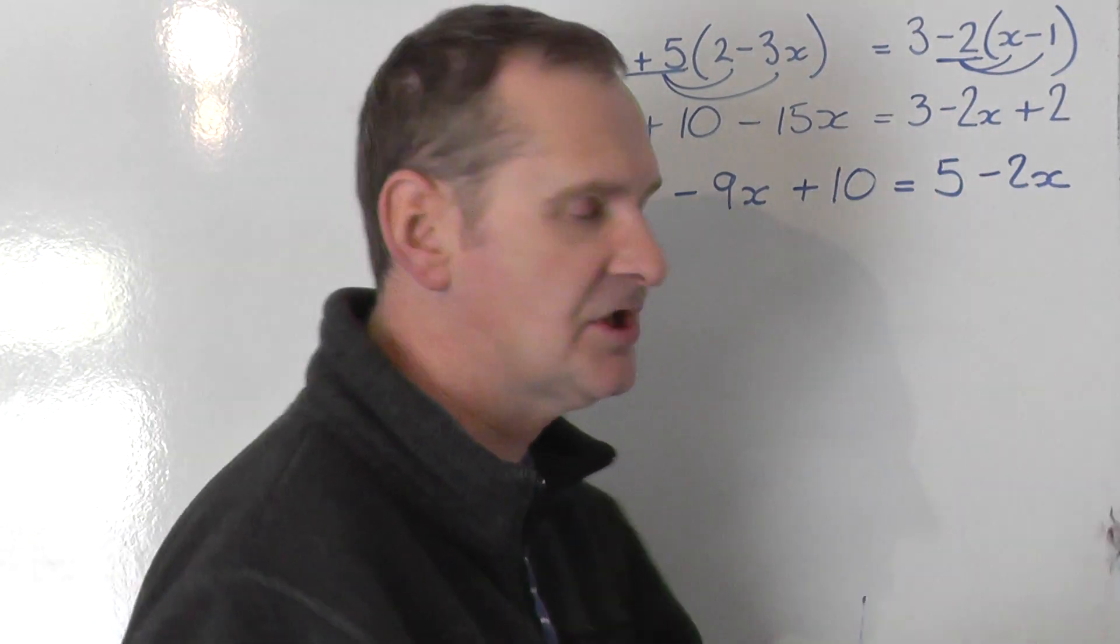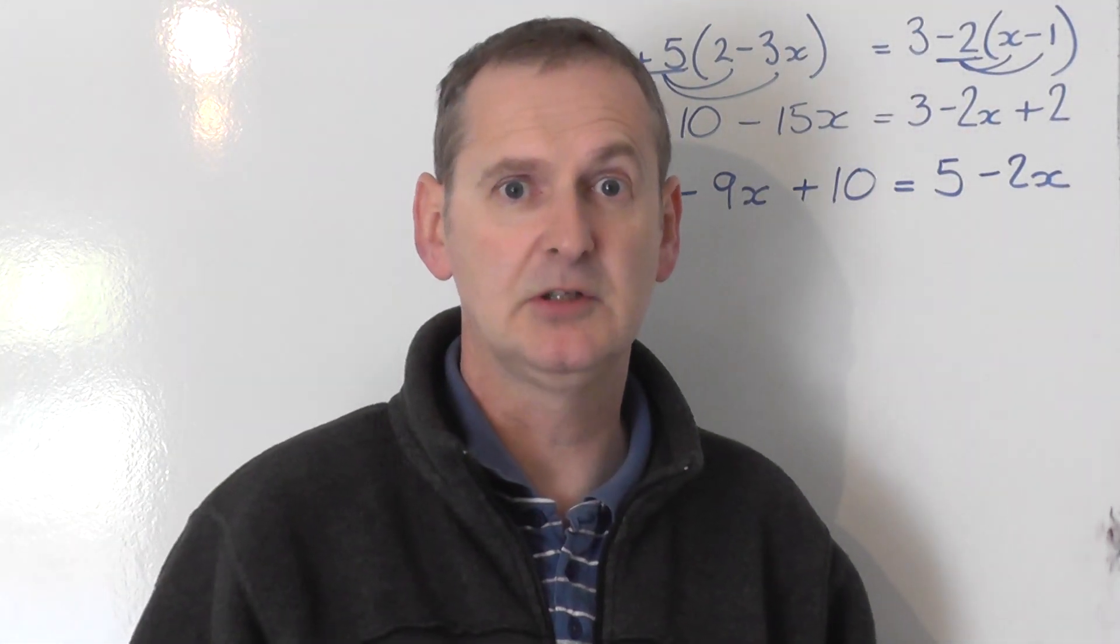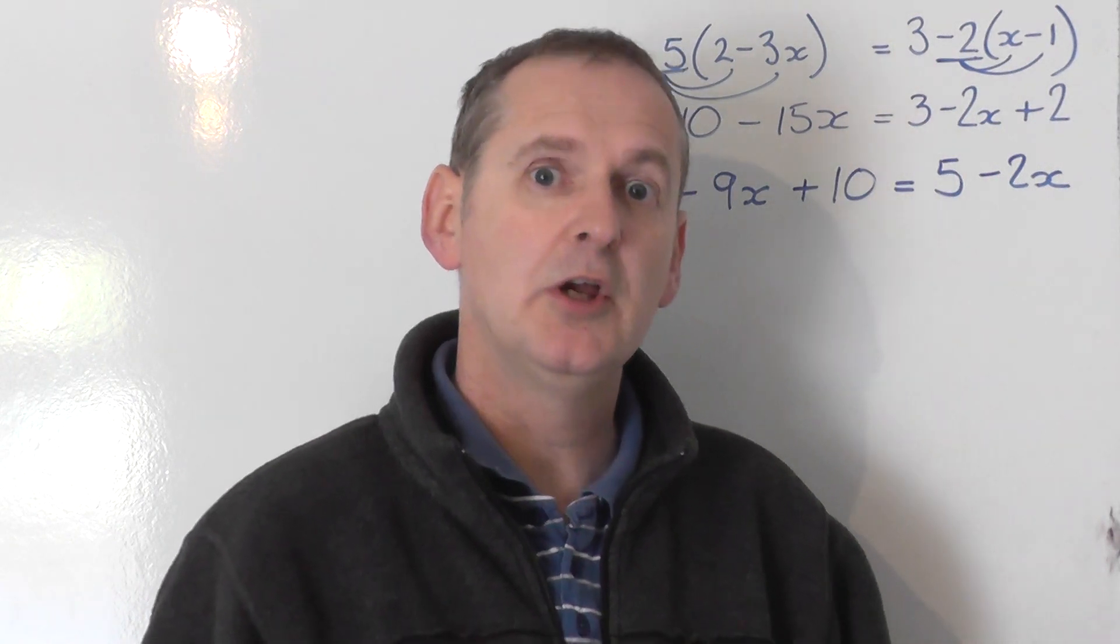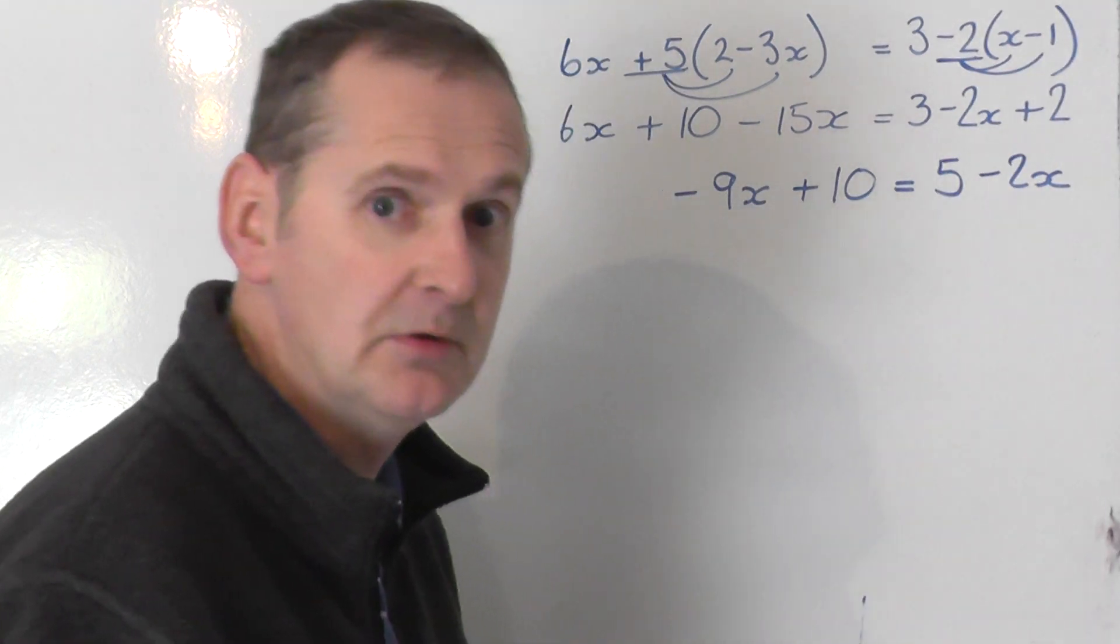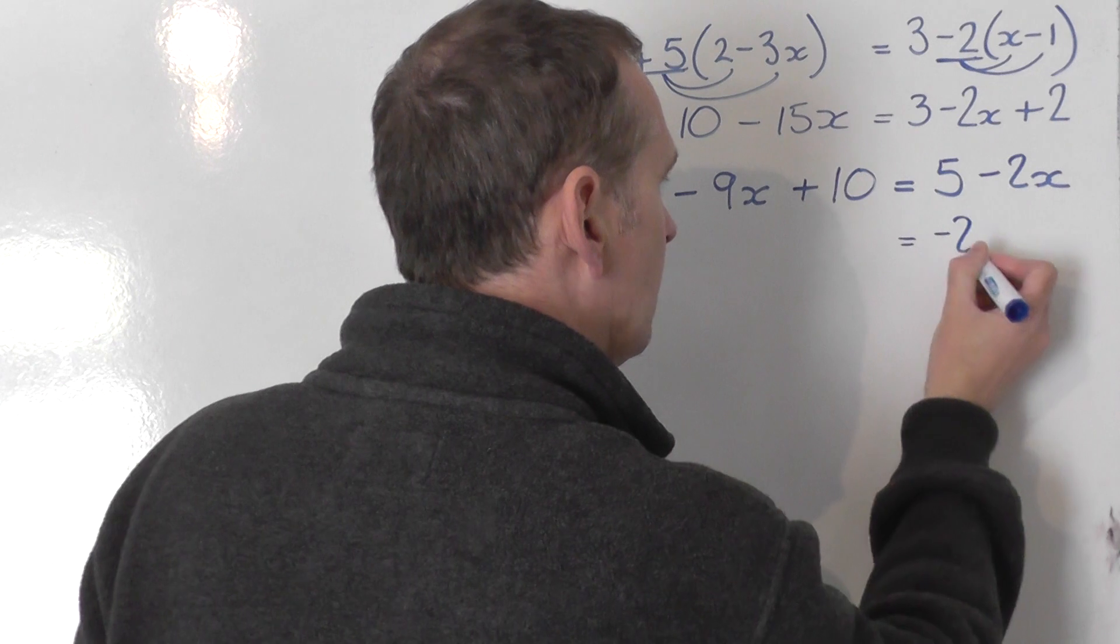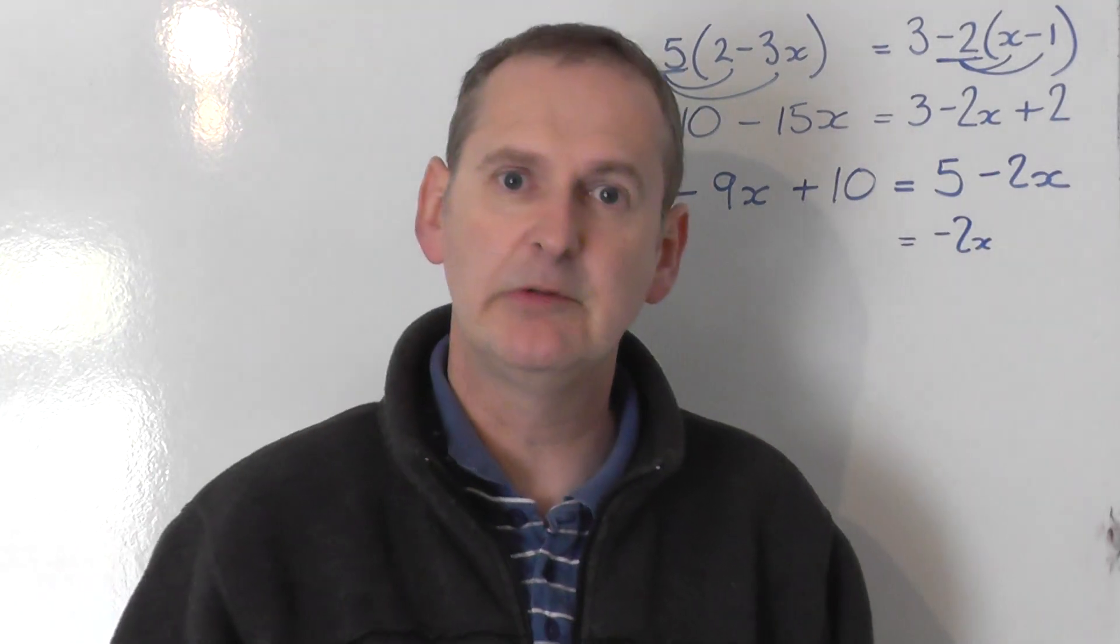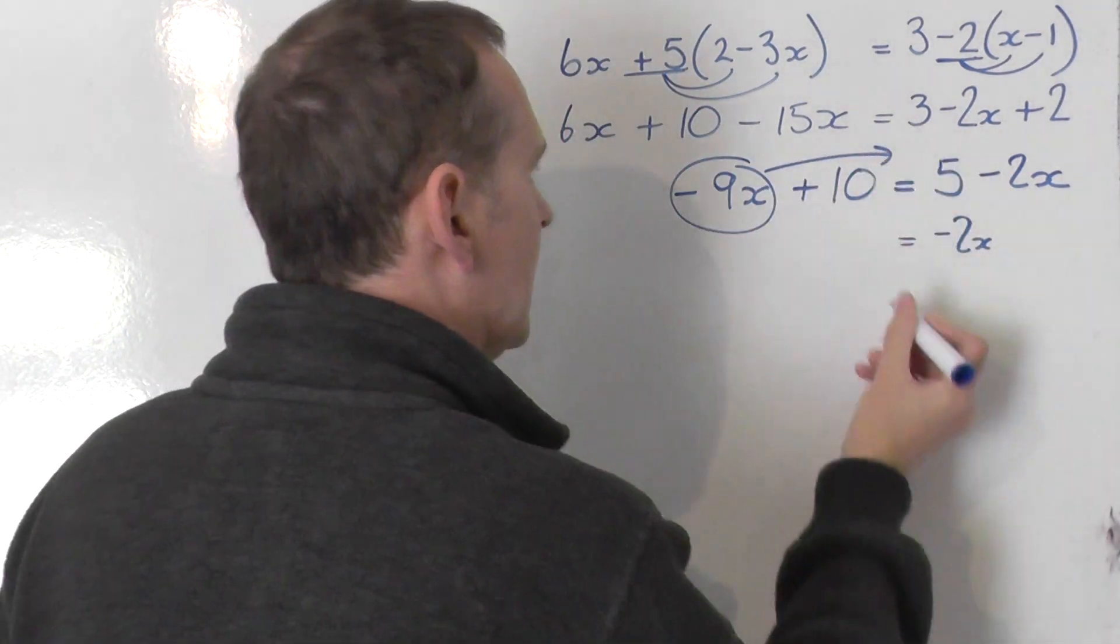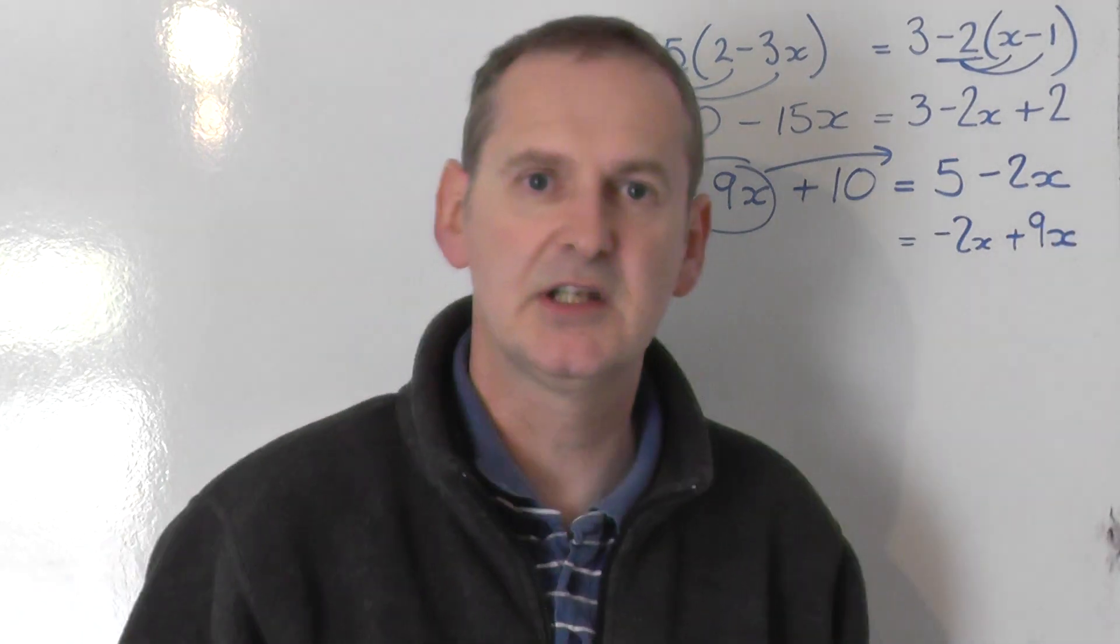Minus 9 is a smaller number than minus 2. So the easiest thing to do is take the x's to the right hand side, because minus 2 is more x's. I'm going to leave the minus 2x alone. It doesn't swap sides so it remains minus 2x. And I'm going to take the minus 9x to the other side and it swaps to become a plus 9x.